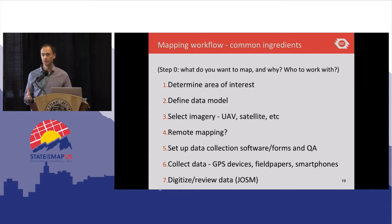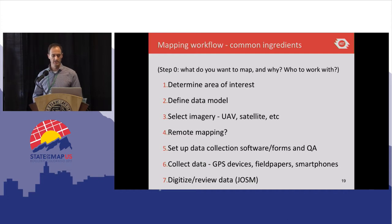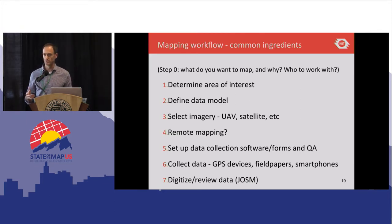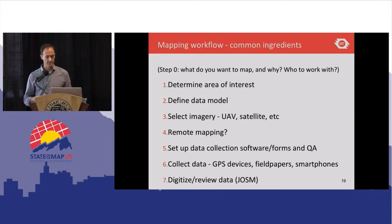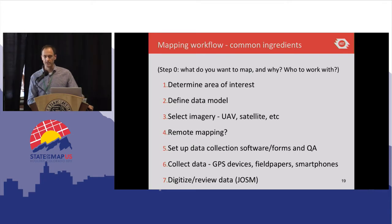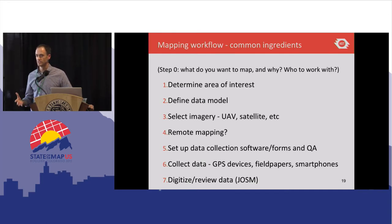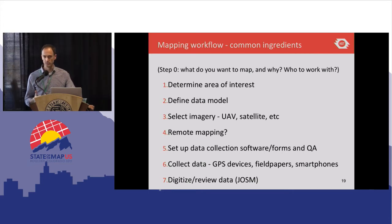When planning an on-the-ground mapping project, these are some of the common ingredients. The first step is to figure out what do we want to map and why. Then determining the area of interest, defining the data model — the types of data we'll be collecting — and selecting the imagery, since sometimes you can collect part of the data remotely. For example, you can collect building footprints remotely before sending your team out on the ground for more detail. You then set up data collection software — we use Open Map Kit quite frequently, maps.me, OSM Tracker, and other mobile-based tools. Then you collect the data using mobile and GPS devices, followed by quality assurance using tools like JOSM, OSM-CHA, and others.